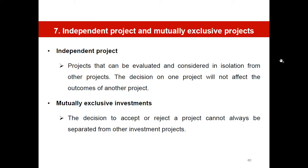That covers all six financial return indicators, including independent and mutually exclusive projects. In the following video, I will show you how to calculate for Project A and Project B. One thing to keep in mind: we need to make a decision to accept or reject a project. The decision rules for acceptance are: NPV should be positive, IRR should be more than K, the Profitability Index should be more than 1, and the payback period should be appropriate.